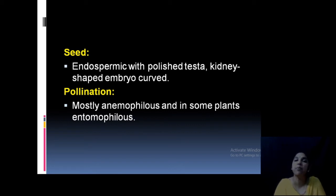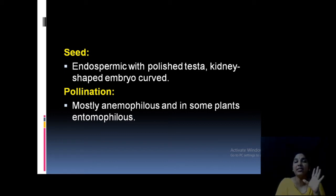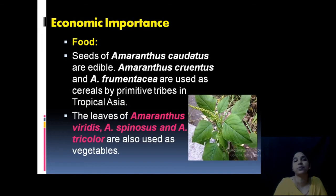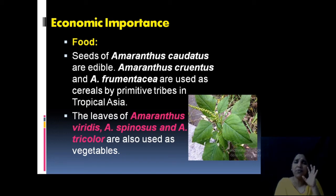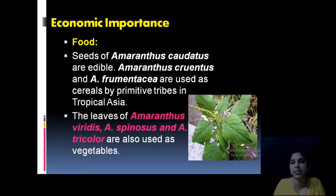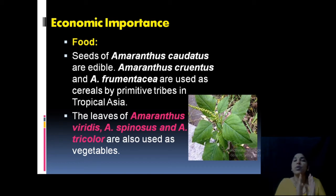Pollination is usually anemophilous (wind pollination), as the scaly nature helps easy dissemination by wind. In some cases, entomophily (insect pollination) is also observed. Key features to remember: scaly nature, stamens numbering 3 or 5 with staminodes present, herbaceous and hairy nature of stem and leaves, spike inflorescence, unisexual flowers in some cases, and inconspicuous flowers.